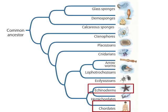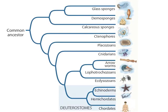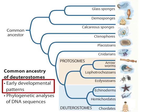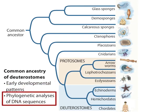Although humans and sea stars are strikingly different in appearance, they are in fact closely related. They are both deuterostomes. Deuterostomes are grouped together, separate from protostomes, based in part on similarities in their early development. However, today the strongest support for their shared evolutionary relationships comes from phylogenetic analyses of DNA sequences of many different genes.